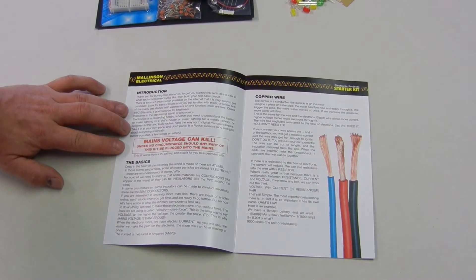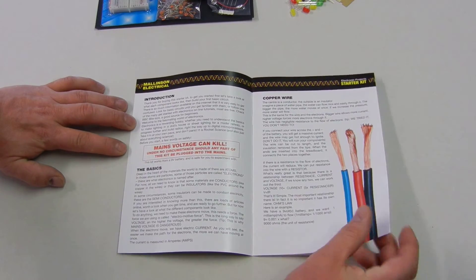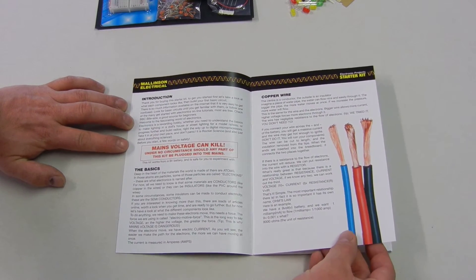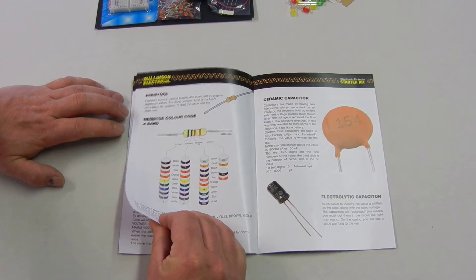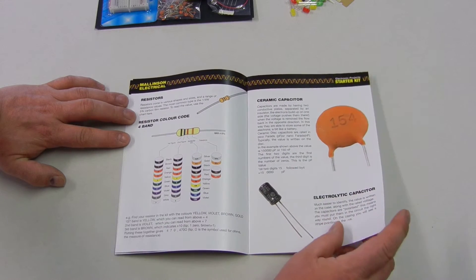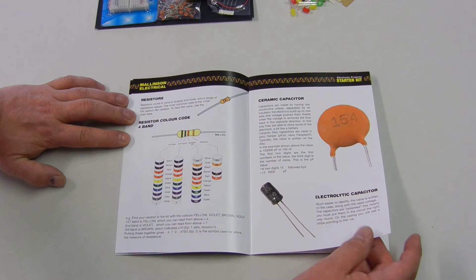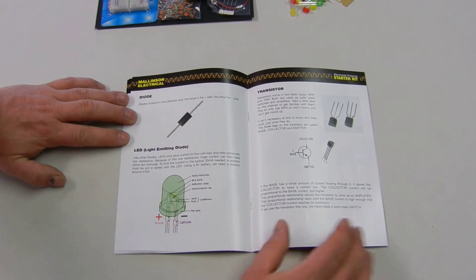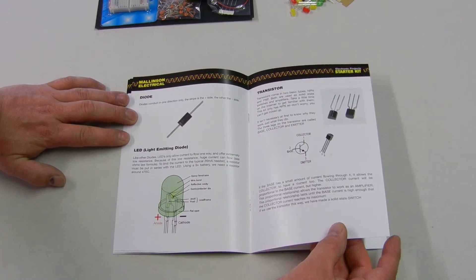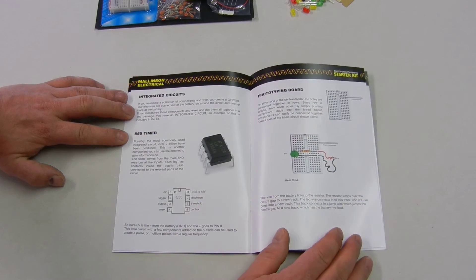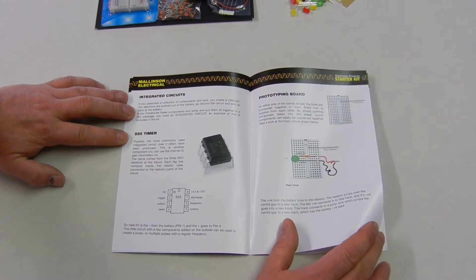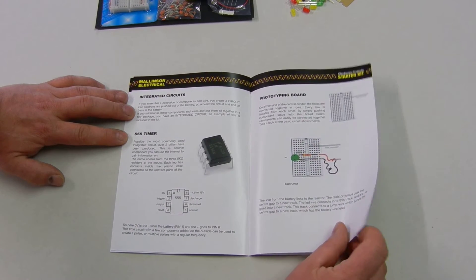Let's have a look through the manual. So we've got a basic introduction telling us where things are, what copper wire looks like, then we're going through what the resistors look like so we can identify them. Capacitors, the diodes, the LEDs, the transistor, and then some information about the IC, the integrated circuit, towards the end of the book.